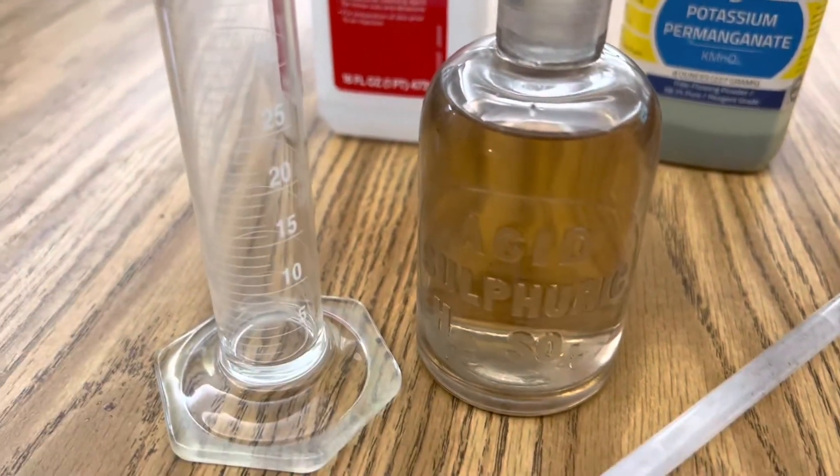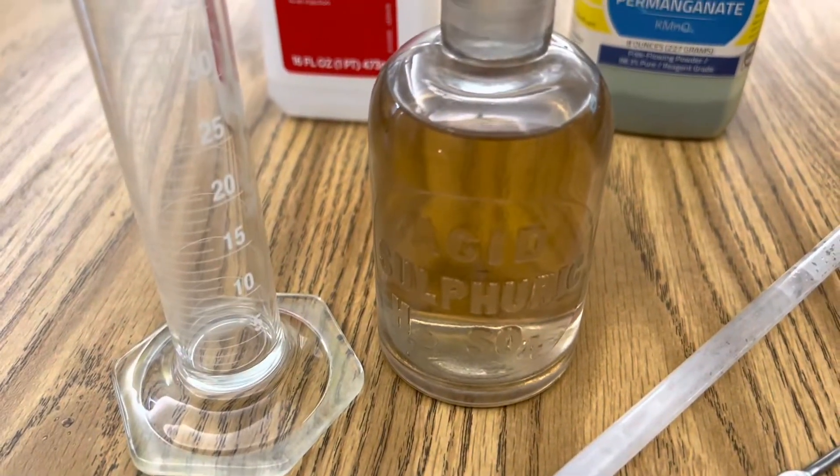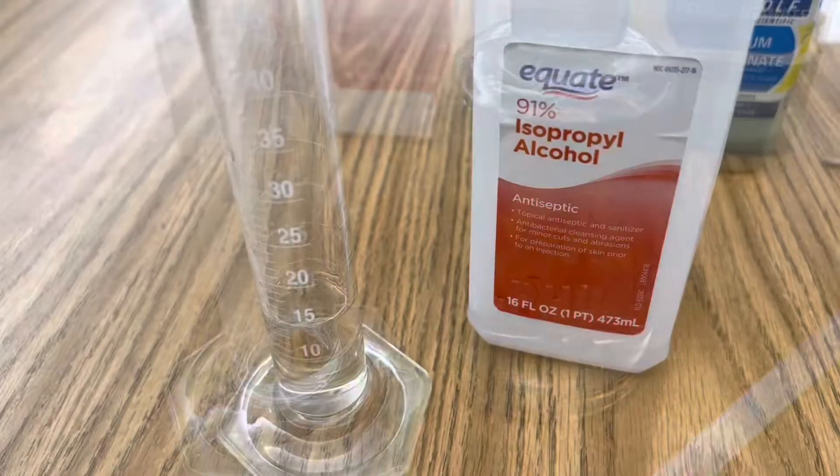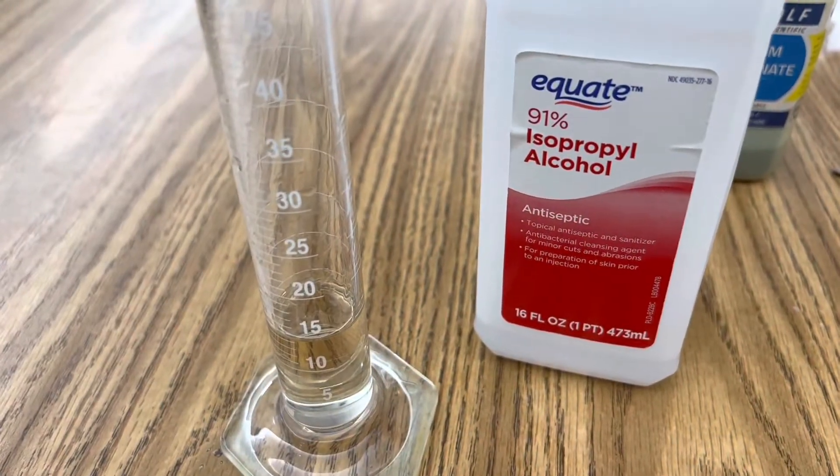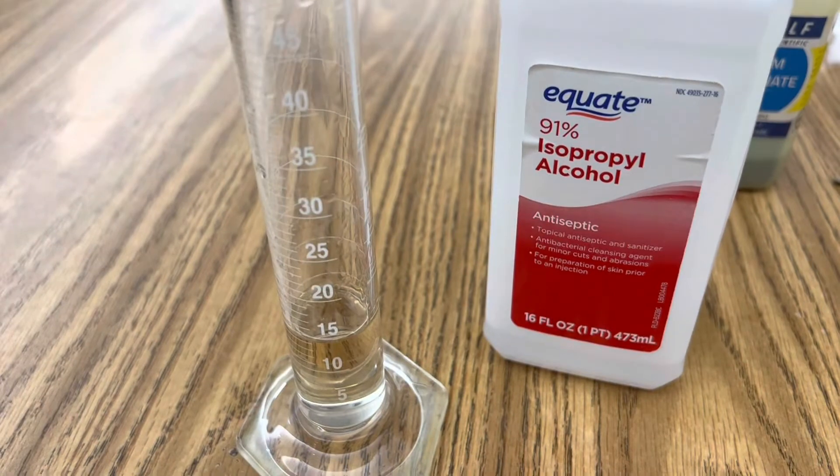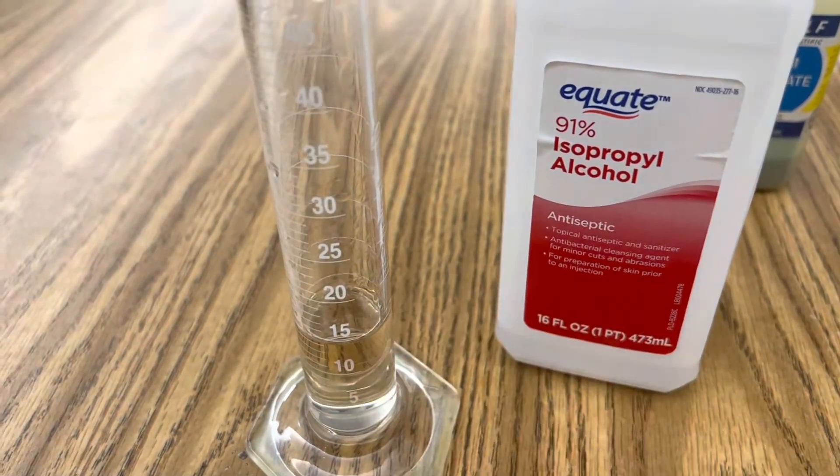Begin this demonstration by adding 15 milliliters of sulfuric acid to your graduated cylinder. Next, add 5 milliliters of isopropyl alcohol, bringing your solution up to 20 milliliters.